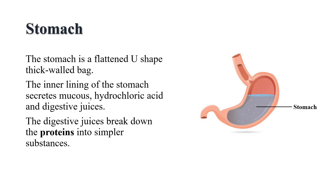The stomach receives food from the food pipe at one end and opens into the small intestine at the other. The inner lining of the stomach secretes mucus, hydrochloric acid, and digestive juice. The mucus protects the lining of the stomach. The acid kills many bacteria that enter along with the food, makes the medium in the stomach acidic, and helps the digestive juices to act. The digestive juices break down the protein into simpler substances.